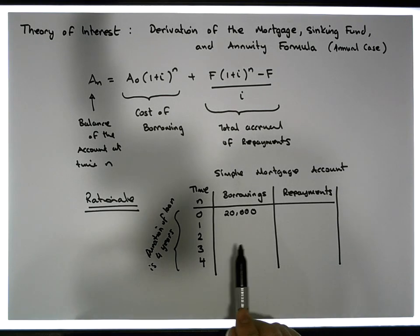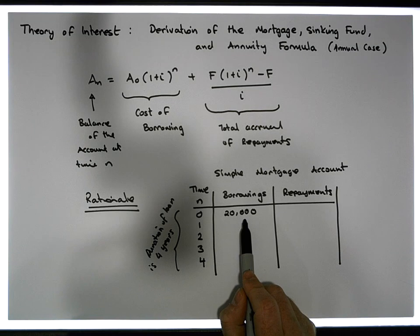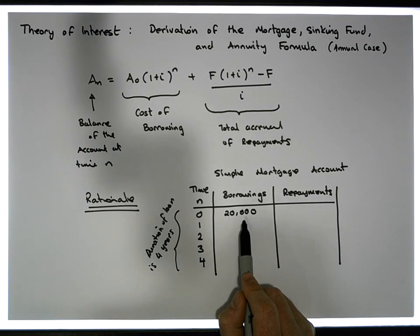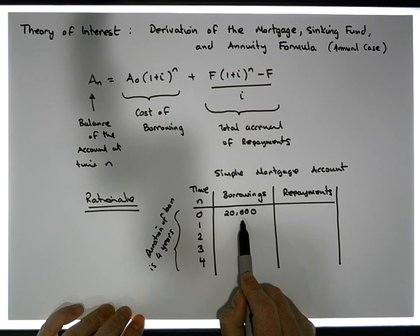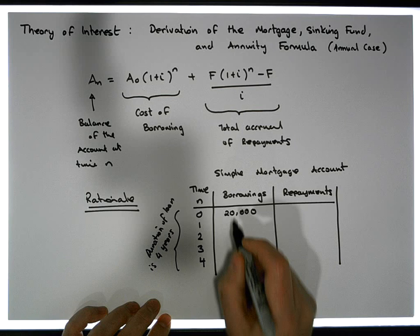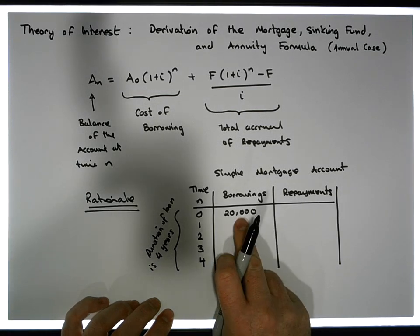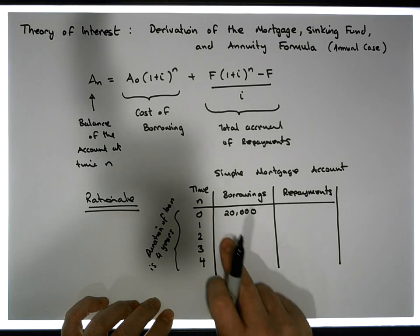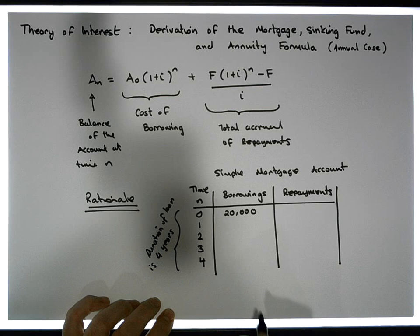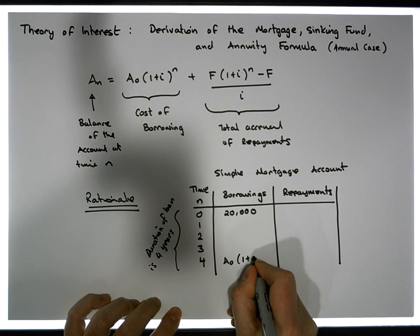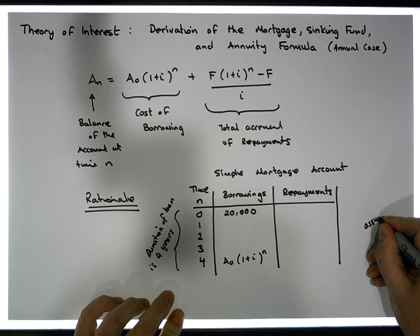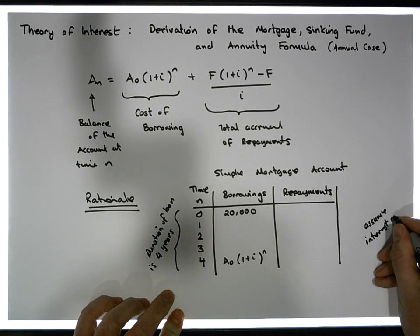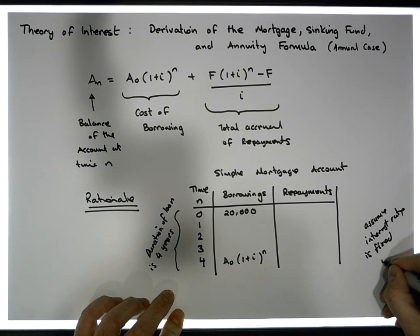Let's think about it from the borrowings perspective. When I borrow an amount of money today at time zero, there's a cost associated with that particular borrowing. This cost is going to be calculated through the application of interest, and more importantly the interest in our case is going to be calculated based on compounding. So the total cost of borrowing — we borrow today 20,000 euros over four years — is how much I borrowed times (1 plus the interest rate) raised to the power of n, the number of years. If we assume the interest rate is fixed, let's say at 5%, or 0.05.